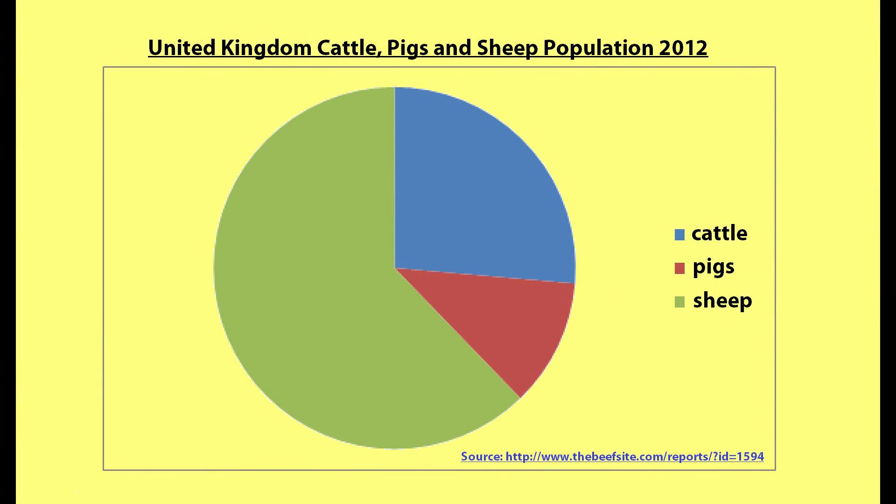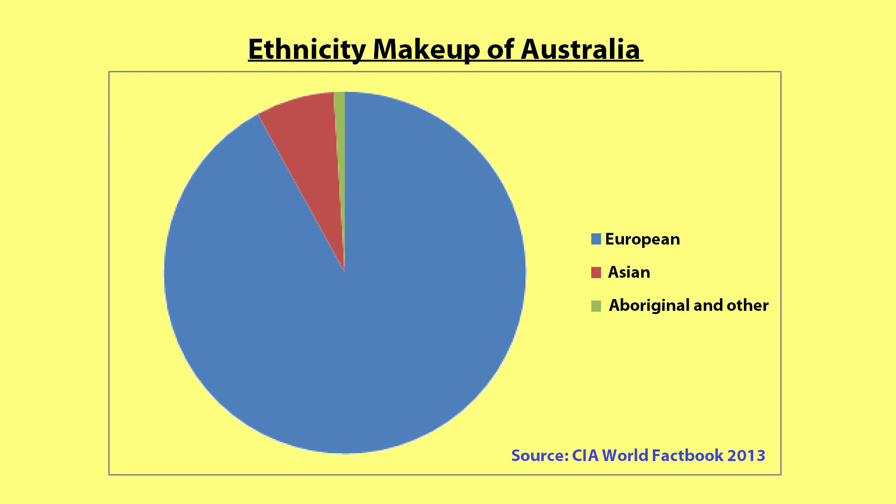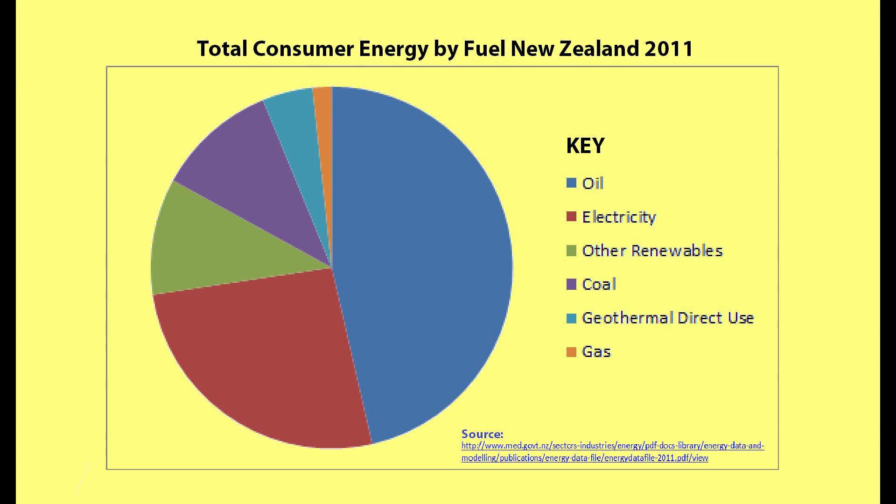Pie graphs are useful for comparing proportions or percentages. For example, pie graphs can be used to show the composition of ethnic groups in a country or the percentage of different forms of energy generation.